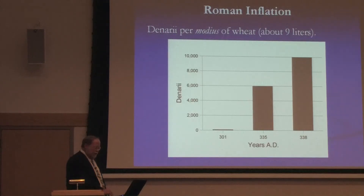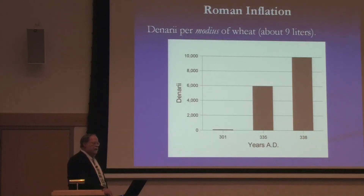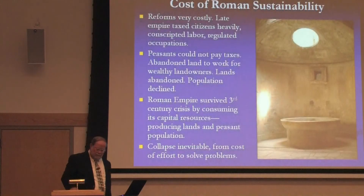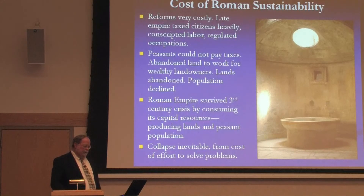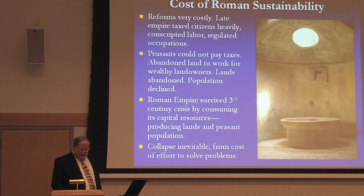So what was the cost to the Romans of being sustainable? Because this is what they were trying to do — they were trying to sustain their empire as a political institution, and also sustain Greco-Roman civilization, which they saw as being threatened. The reforms were very costly because of the increase in complexity. The empire taxed citizens very heavily, conscripted labor, and regulated occupations.